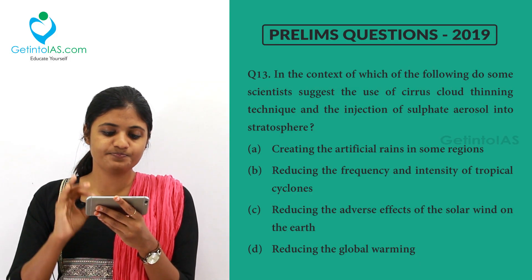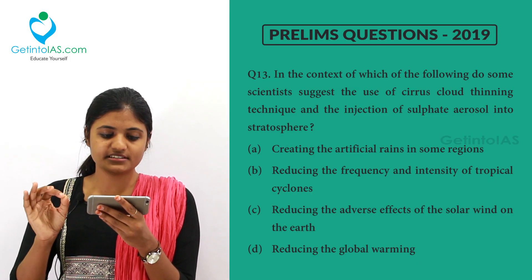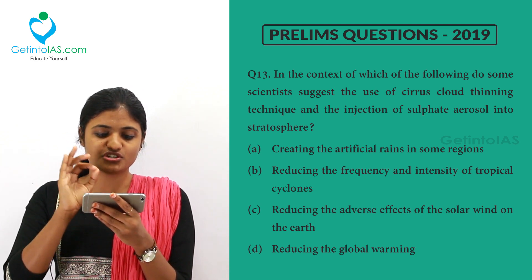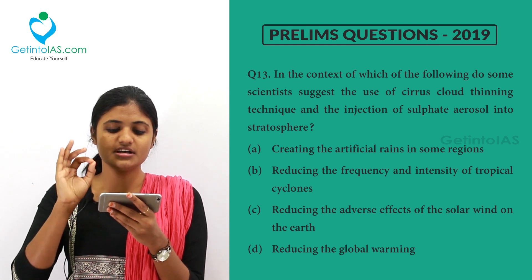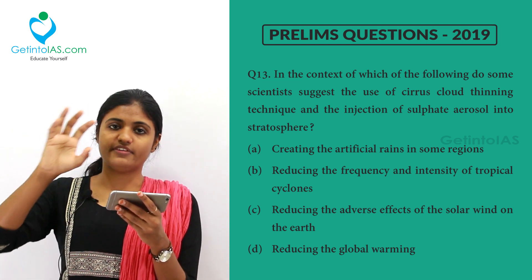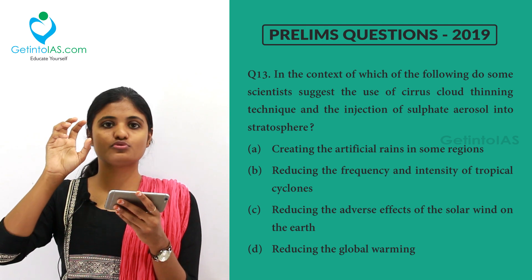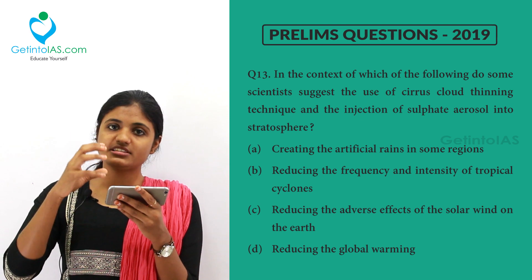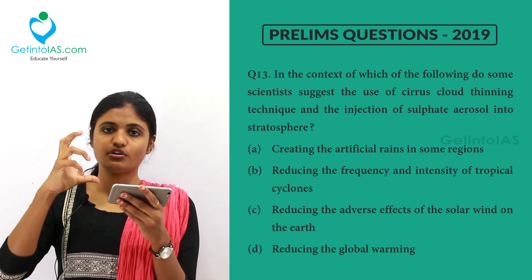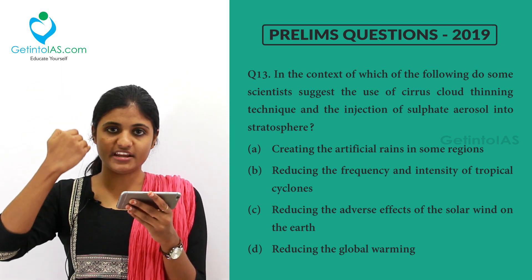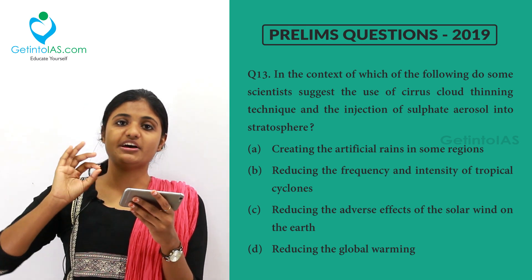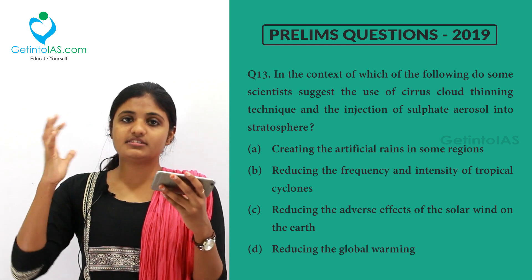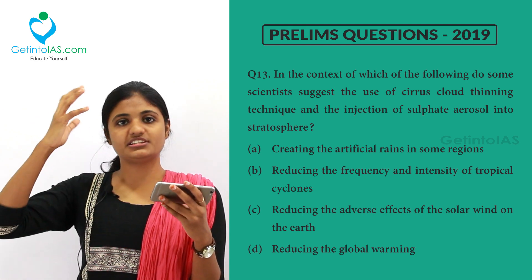In the context of which of the following do some scientists suggest the use of cirrus cloud thinning technique and the injection of sulphate aerosols in the stratosphere? The stratosphere is the area where you have the ozone layer, which acts as a protection layer from UV radiation. Due to thinning of the ozone layer, more UV radiation is entering. One suggested measure is cirrus cloud thinning — cirrus clouds are found mostly in the stratospheric region.